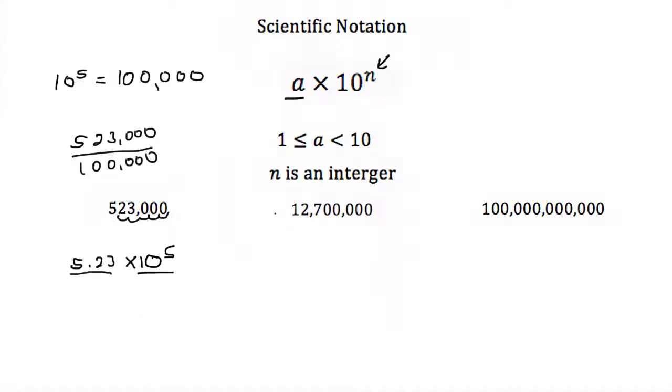So let's try this again. We have 12,700,000, and when I want to write this in scientific notation, well again our a has to be between 1 and 10, so we're going to end up with 1.27, and then it's times 10 to some exponent.